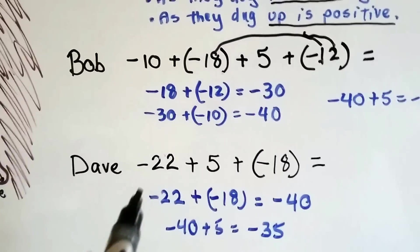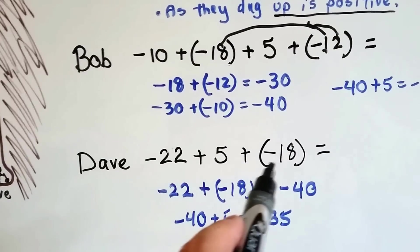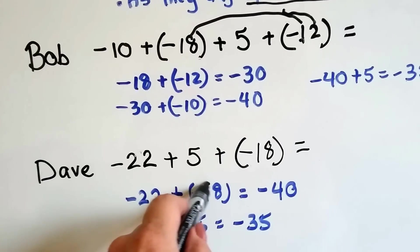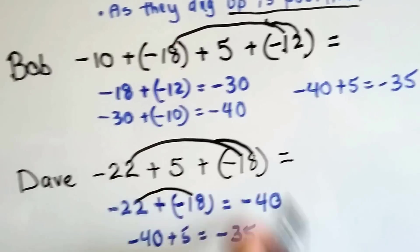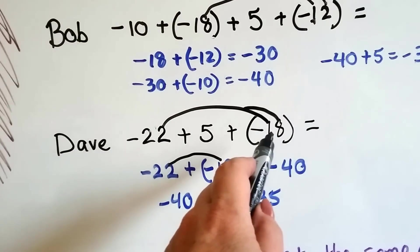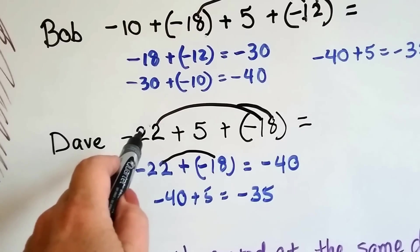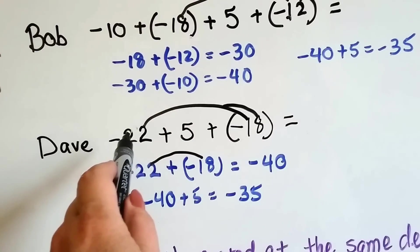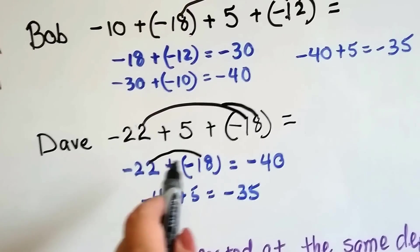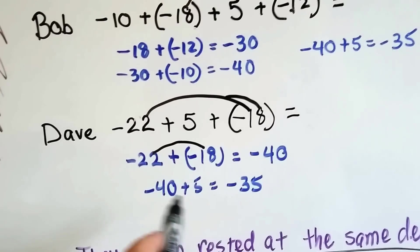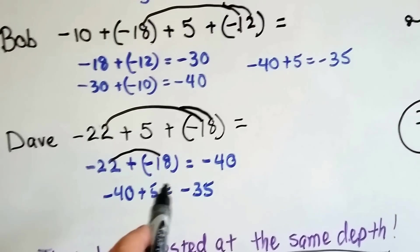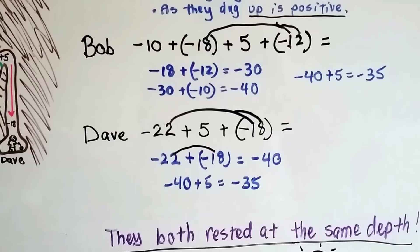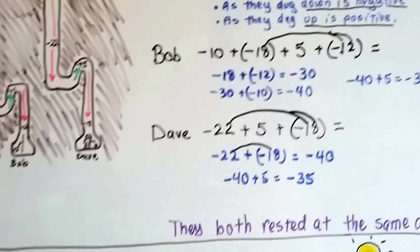Now let's do Dave. Dave went down 22 feet, up 5, and then down 18. So, we're going to add a negative 18. Do you see compatible numbers? I see these two as compatible numbers. I see a 2 and an 8 again that can make a 10. Then when we add this 10, we now have 20. And if we add these two 10s, we have 40. It went 10, 20, 30, 40. So, now the 22, the negative 22 plus the negative 18 made a negative 40. We still need to add this 5. Look, it's just like this one. Negative 40 plus 5. We know it's going to be a negative 35. So, guess what? They both rested at the same depth. They dug differently, but they ended up at the same level.